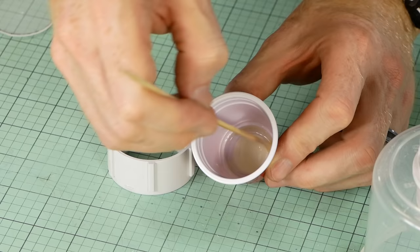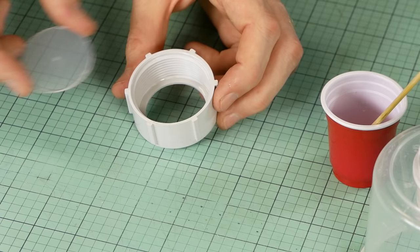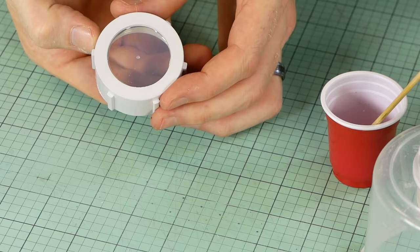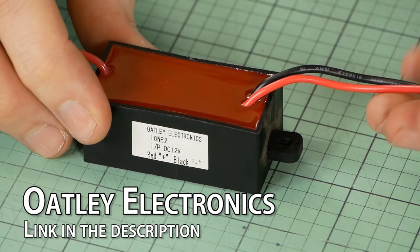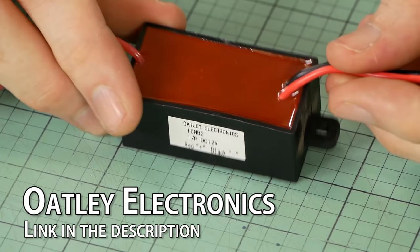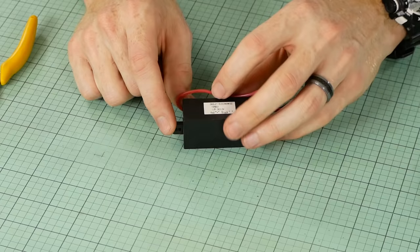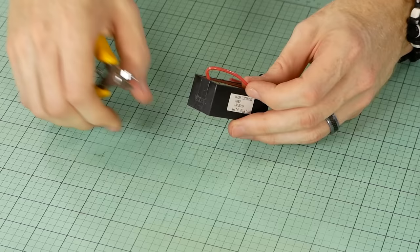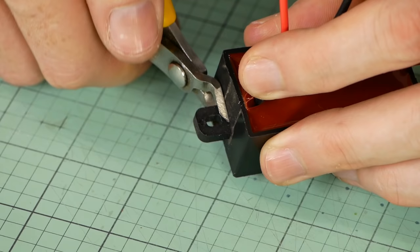The main guts of the static grass applicator is the negative ion generator from Oddly Electronics. If you're going to build one of these applicators, I highly recommend using this negative ion generator because it has a very high output voltage and has been specifically designed for use with static grass applicators. The applicator I'm building is very compact and space is scarce, so I'll need to remove the two small mounting tabs from each side of the generator.